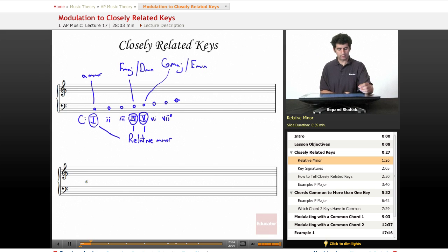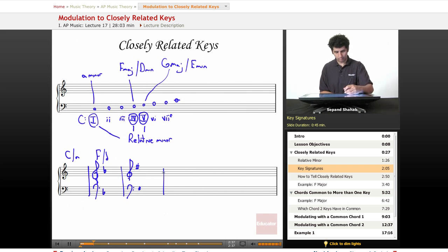And so let's look at the key signatures of all of these keys. So here is the key signature for C major or A minor. And then here is the key signature for F major or D minor. And finally, here is the key signature for G major or E minor.